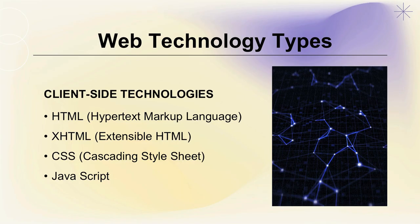Web technology types: The first category is Client-Side Technology, which includes HTML (Hypertext Markup Language), XHTML (Extensible HTML), CSS (Cascading Style Sheets), and JavaScript.